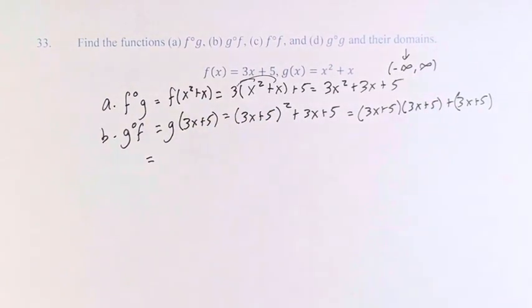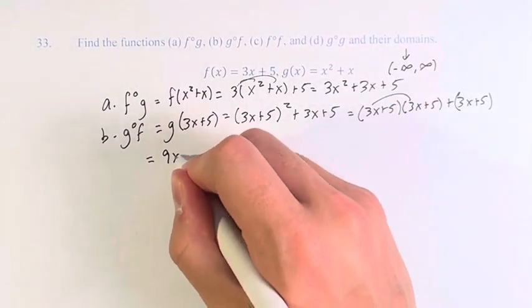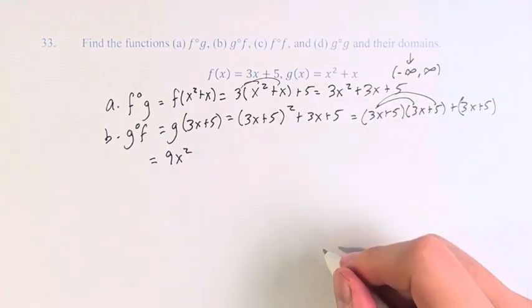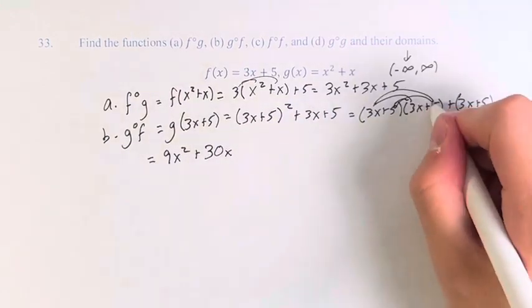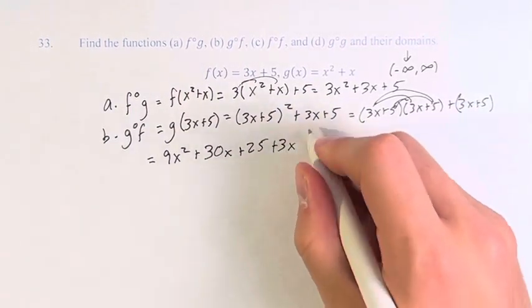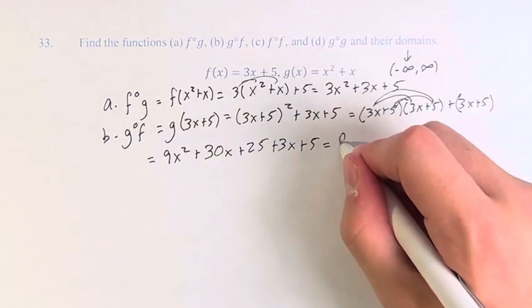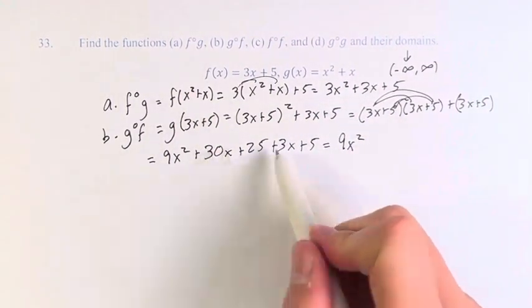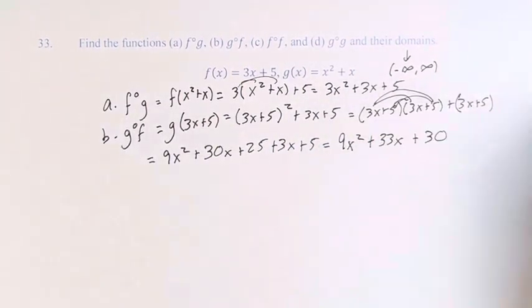This is equal to three x times three x is nine x squared, plus five times three is 15x, plus another 15x is plus 30x, plus five times five is plus 25, plus an additional three x plus five. Finally, we combine like terms: nine x squared, 30 and three make 33x, 25 and five make plus 30. This is g of f.